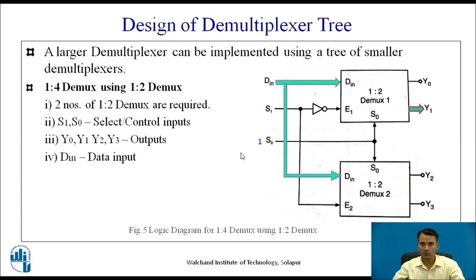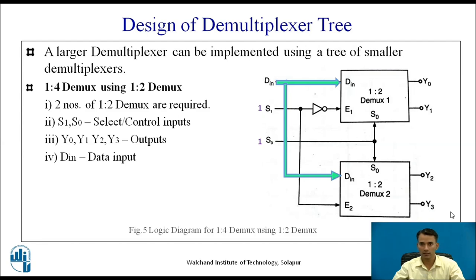When S1=1 and S0=0, the first demultiplexer is disabled and the second demultiplexer is enabled. Since S0=0, Y2 is selected and Din is connected to Y2. When S1 and S0 are both 1, S1=1 enables the second demultiplexer and disables the first, and S0=1 selects the second output of the second demultiplexer, so Din is connected to Y3. This is how a demultiplexer tree works.